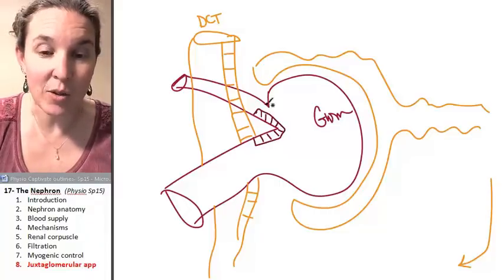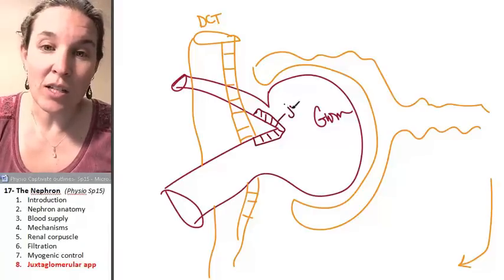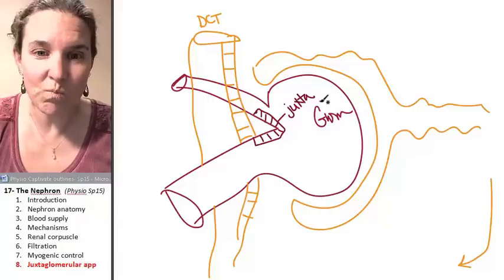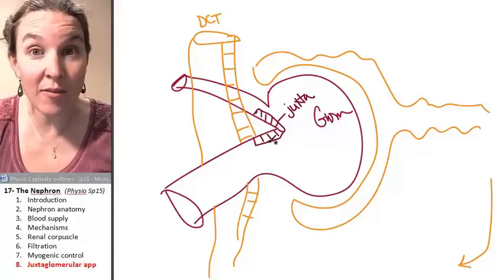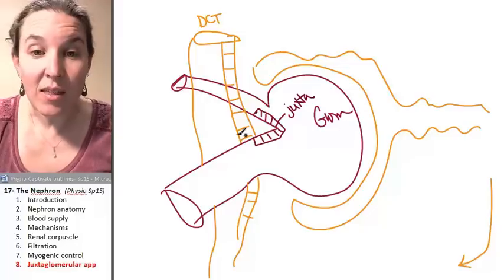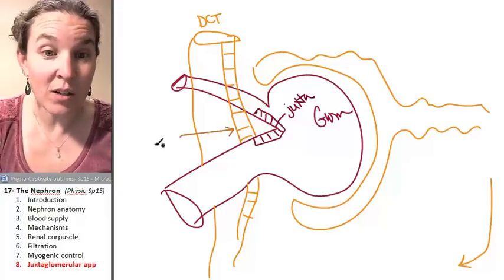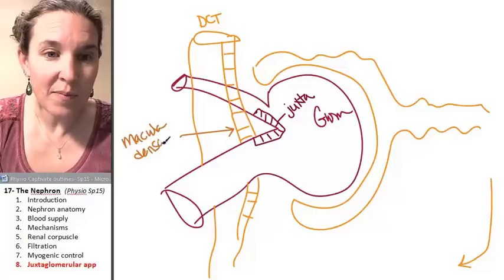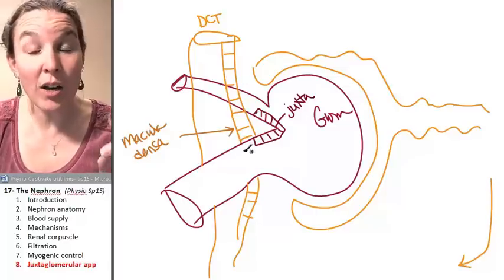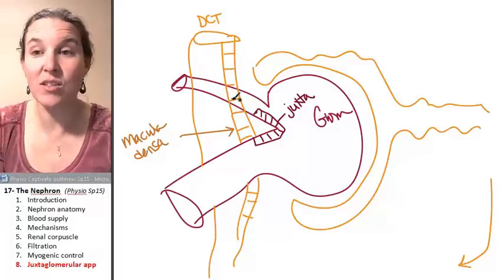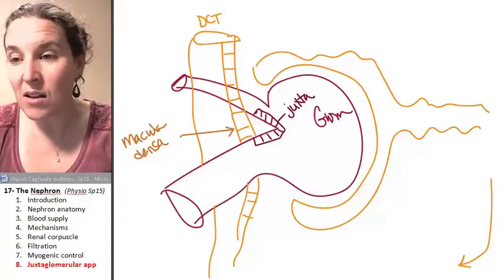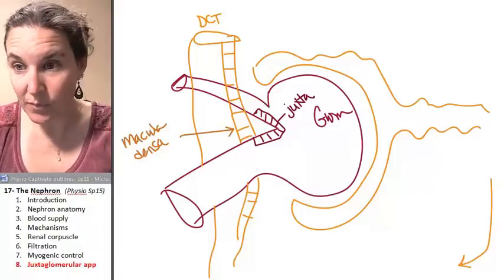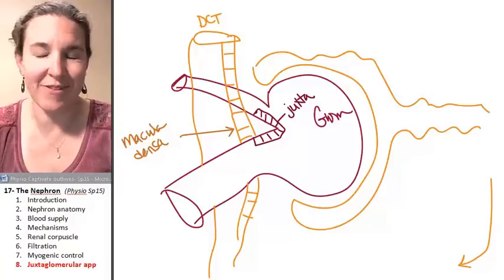We've got some names to do. These guys are called juxtaglomerular cells, and those are cells of the afferent and efferent arterioles. These guys are called macula densa cells. They're not magic, they're just physiologically phenomenal.